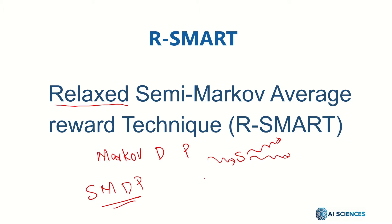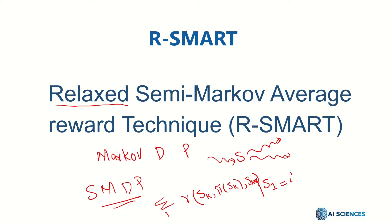For example, if you start from the i-th state S_i, the rewards that you get are based on some policy that tells which actions you should pick when you are in state S_K. Then you may go to some other state S_{K+1}. If you take the sum of those rewards from 1 to infinity and take an expected value of that, that is called the average reward.